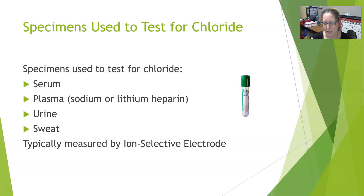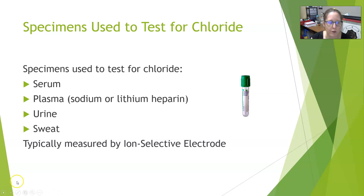Chloride is measured by ion-selective electrode as part of the electrolyte panel, using a slightly different electrode than those used for sodium and potassium. That wraps up all of our electrolytes — thank you.